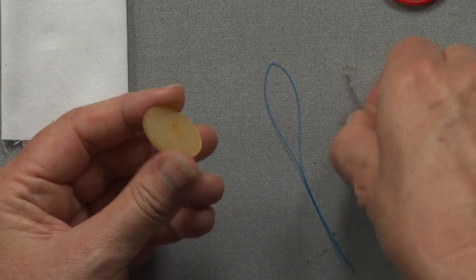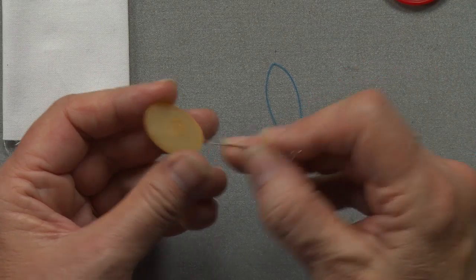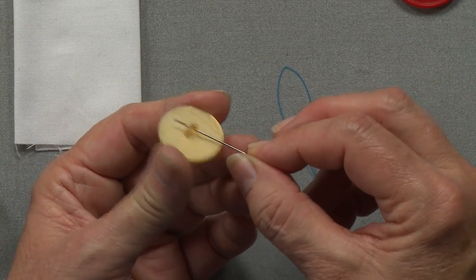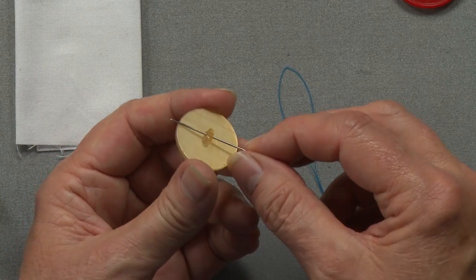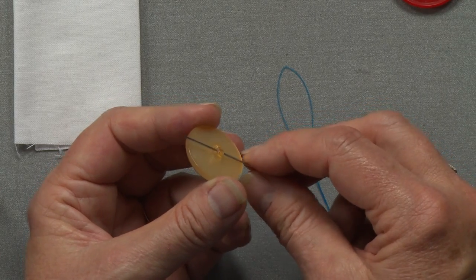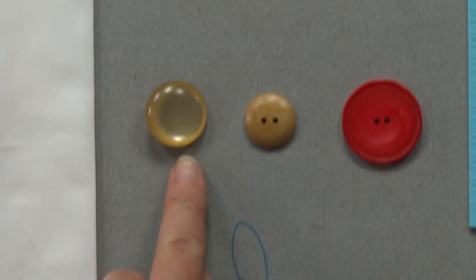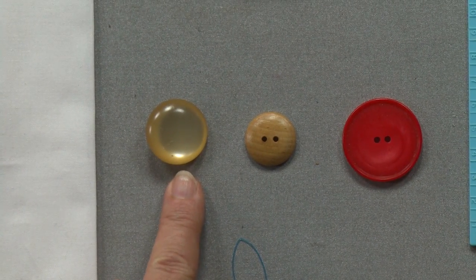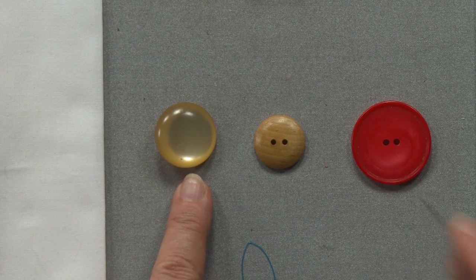The shank button is often used on coats and tailored garments because it's going through thicker fabric and has a shank that raises it up off the fabric. Then you sew through the holes here. I'm going to show you how you can simulate the shank with this type of button.